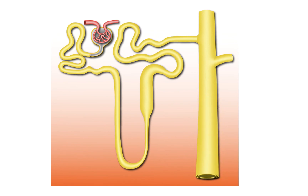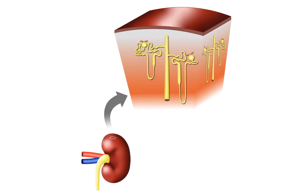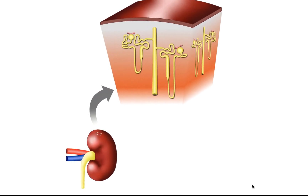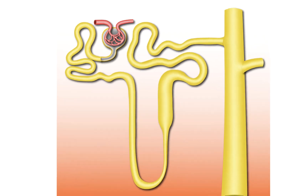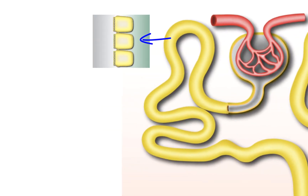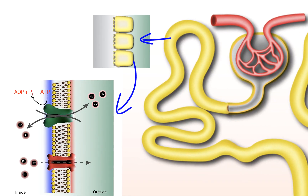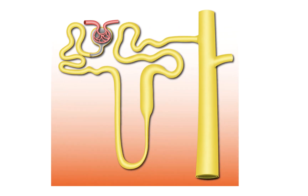There you have it — the basic functions of the individual nephron segments and how they contribute to the kidney's ability to influence body fluid homeostasis. There is an incredible array of cellular and molecular processes responsible for all the movements of solute and water described here. Please look for additional videos that will explain each of these processes so you have a more complete view of how the nephron functions.